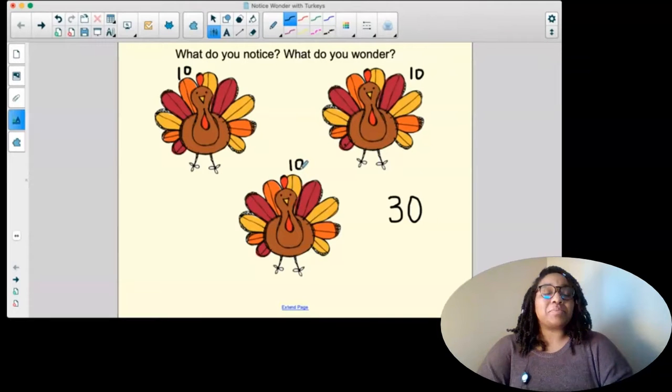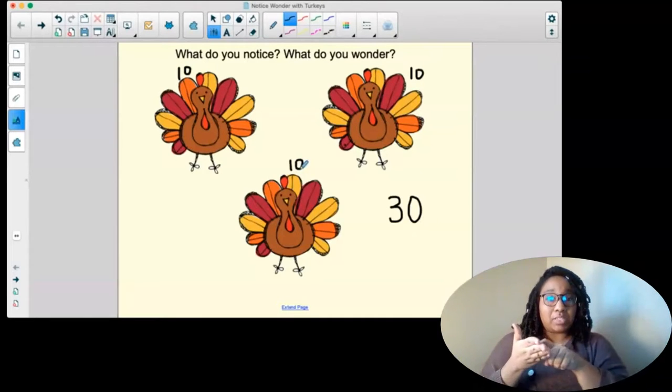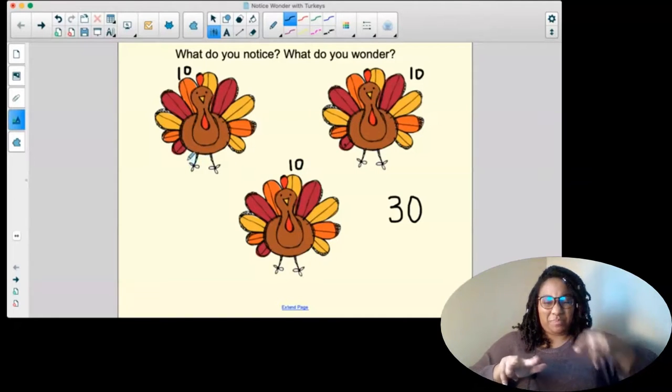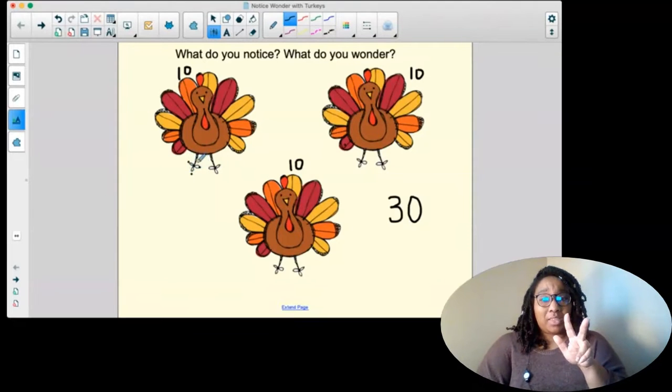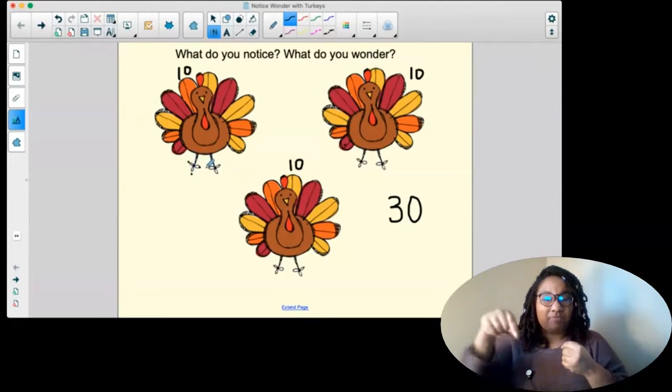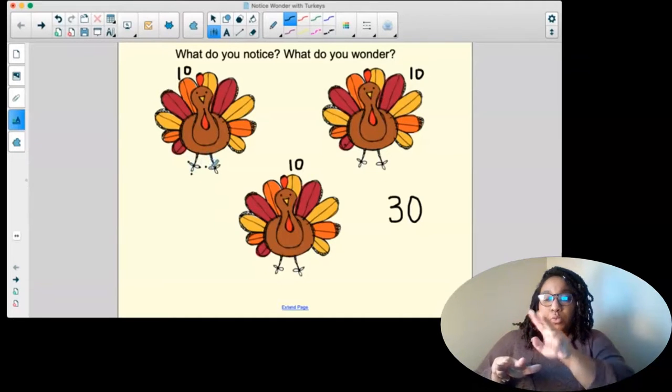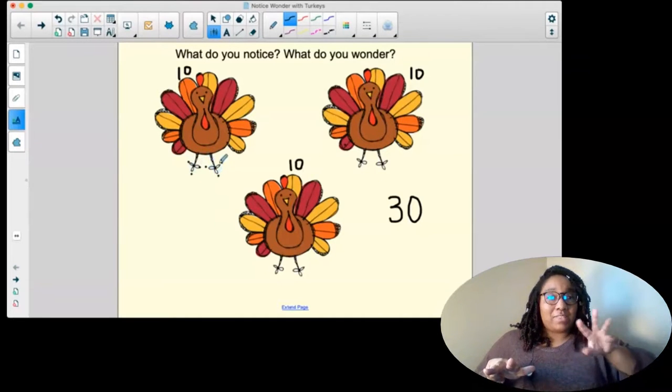Okay, I'm going to guess you probably noticed the turkey toes. Did anyone notice those cute little turkey toes? We've got a one, a two, and a three. That's one foot. And let's see, we've got one, two, three, four, five, six on each turkey.